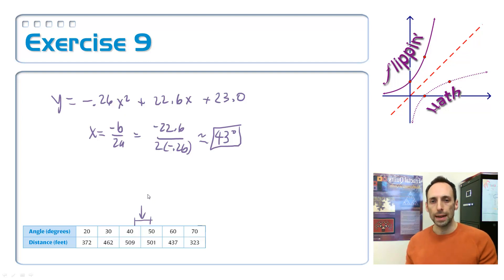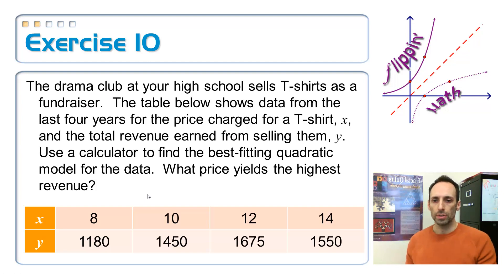Okay. So, why don't you go ahead and practice this. Practice this on this drama club t-shirt question on exercise 10. So, you are finding the quadratic equation for it. And you're finding what is the best price for that t-shirt.